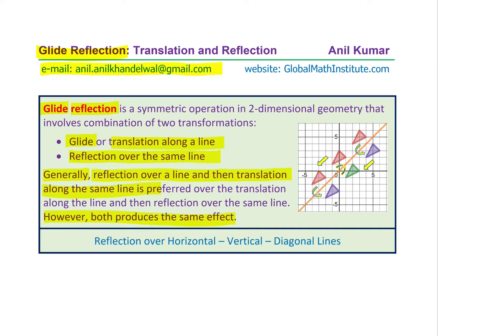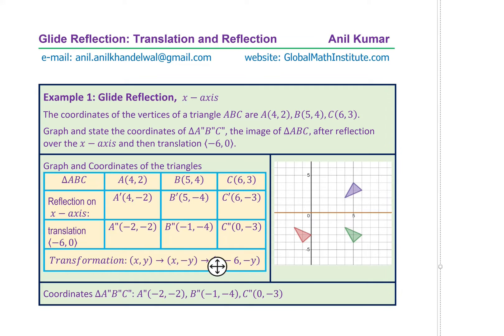But let us be very specific about it. When we say glide reflection, if we begin from an object here, we'll first reflect the object, and then we are going to translate it. These are the two operations we'll normally perform. We'll take up examples where the reflection will be over a horizontal line, a vertical line, and a diagonal, which will cover most of the types of examples.